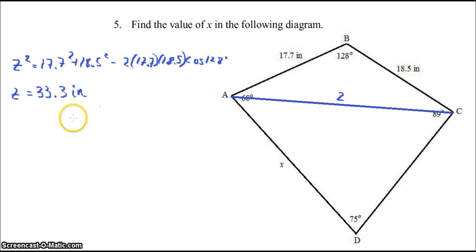Okay, now that we know this one is 33.3 inches, we could find, say, this angle here, then find this one, and I think we'd have everything we needed. So how do we find this angle? Let's call it W, 17.7 over sine W would equal 33.3 over sine of 128. So using the law of sines, we can solve for sine W.